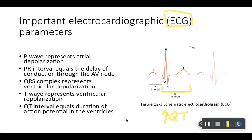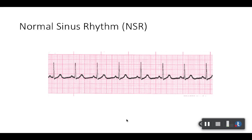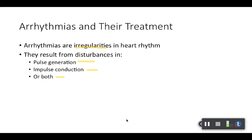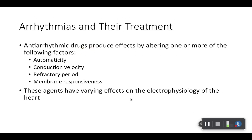That's why I joke that's all we care about in pharmacy — not 100% true, but the main take-home point from this slide for testing purposes and board success regarding pharmacological questions: increased QT or QT prolongation. Arrhythmias are irregularities in heart rhythm, and there are different things that can cause those — pulse generation, impulse conduction, or it can be both.